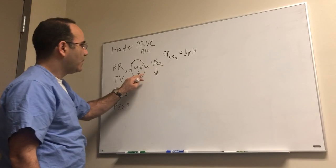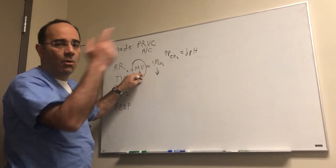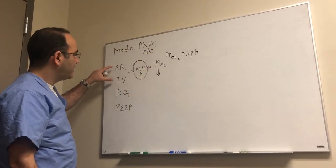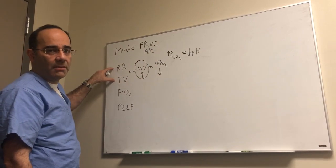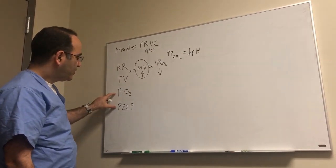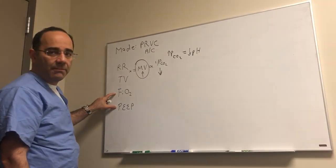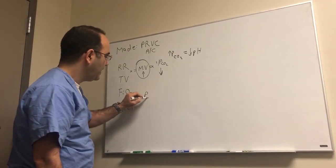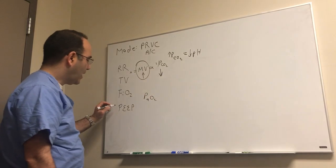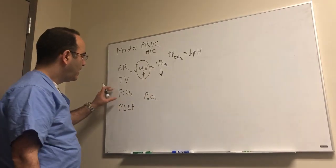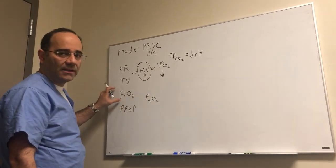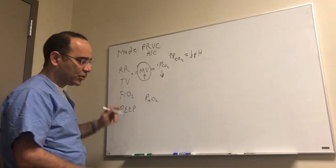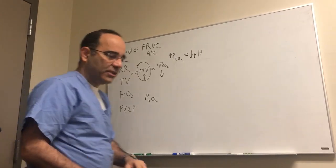This is an important relationship to understand and that's why this is the only number you ultimately care about. If a guy is acidotic, you want to raise the minute ventilation and blow off the acid. How you raise it, respiratory rate versus tidal volume, we'll talk about in a second. These two variables, FiO2 and PEEP, are the ones that mainly affect oxygenation. This will affect your PAO2. Going up on the PEEP to a large degree, and obviously the amount of oxygen you provide, improves the O2 sat.